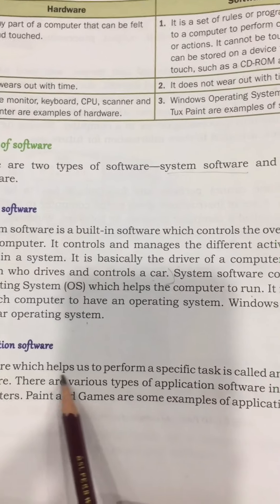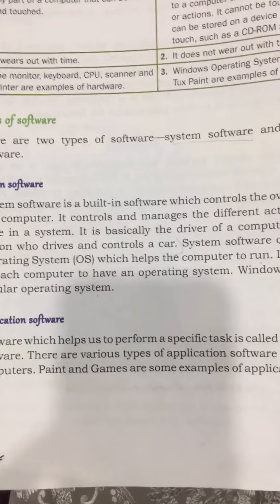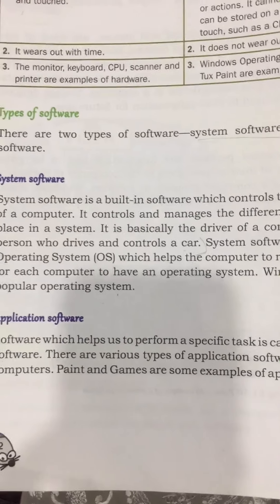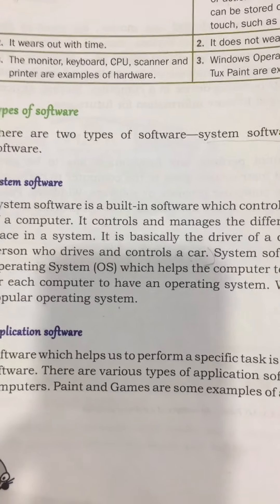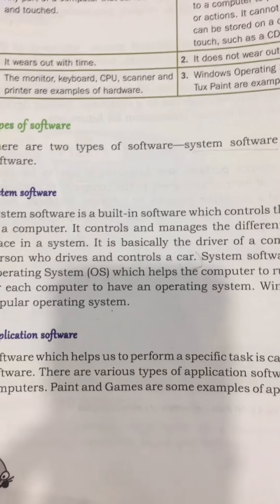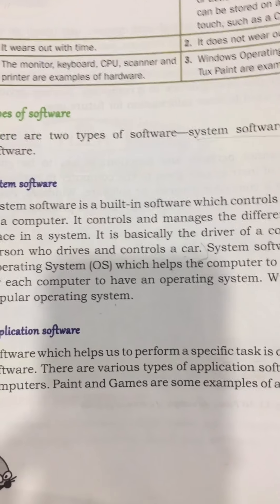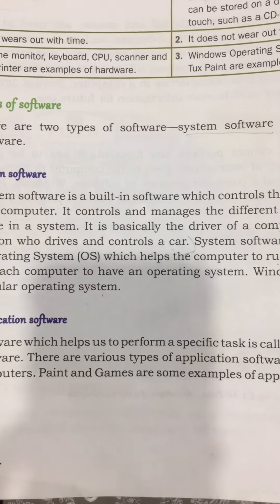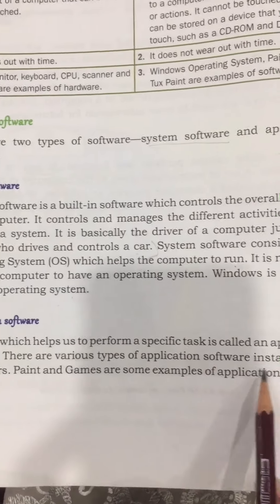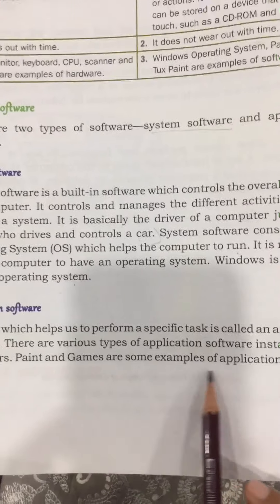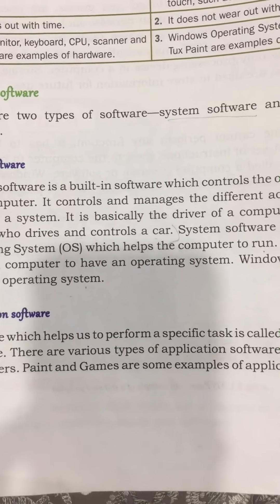Next is application software. Software which helps us to perform specific tasks is called application software. There are various types of application software installed in all computers. Paint and games are some examples of application software — as you can do Paint on your computer, this is also application software.